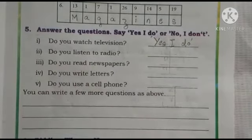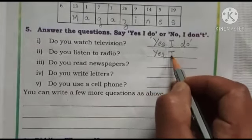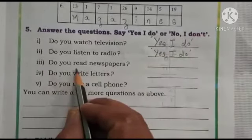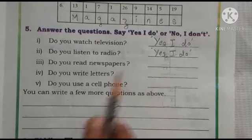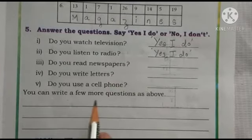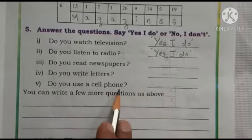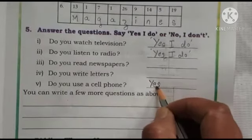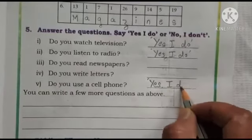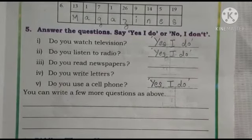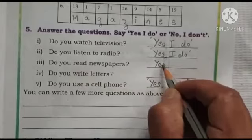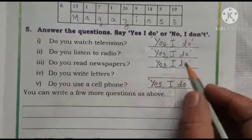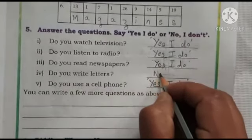Do you listen to radio? If you listen to radio, write yes; if not, write no. Do you read newspapers? If you read the newspaper, write yes; if you don't, say 'no, I don't'. Do you write letters? Do you use a cell phone? All students use cell phones now for online classes during Corona. Write yes. If you don't write letters, write no.